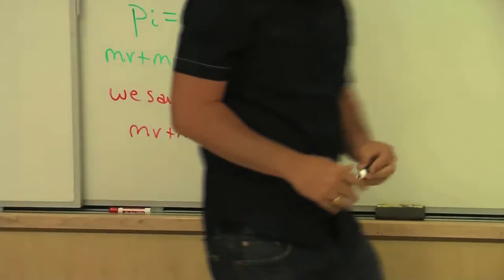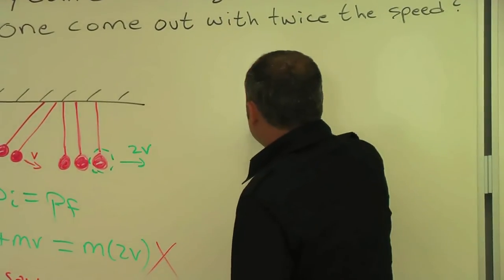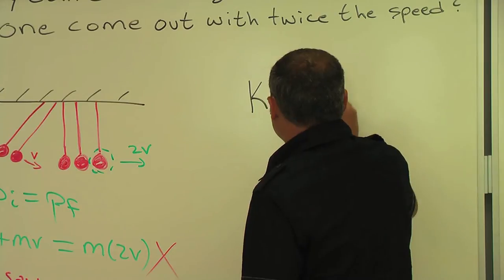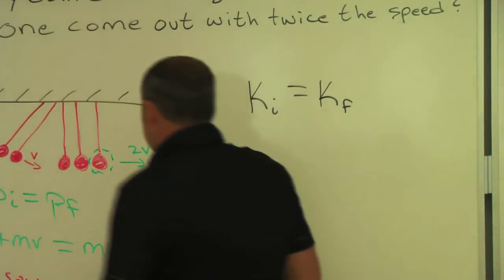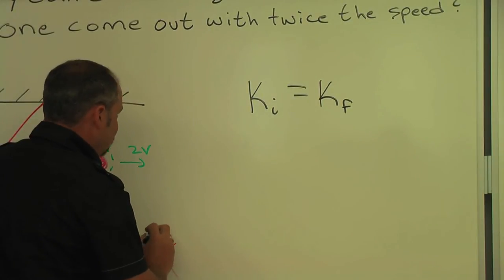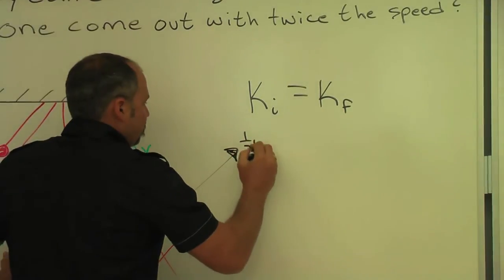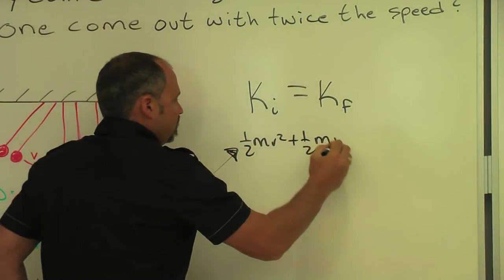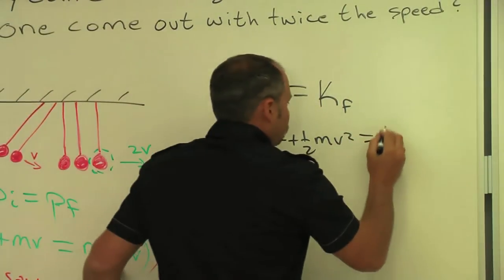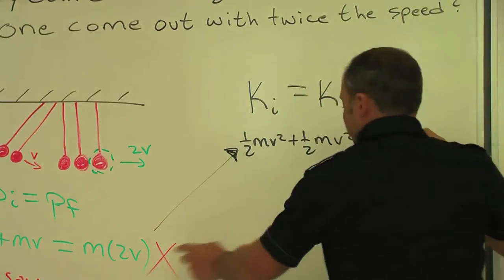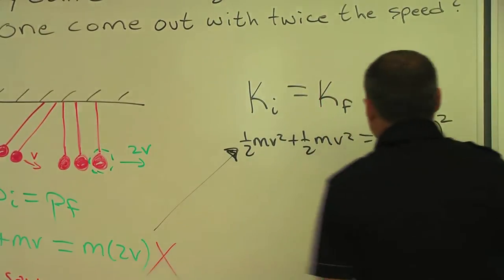So we have the initial kinetic energy equals the final kinetic energy, and in the initial kinetic energy, well, if we tried to do this, we would have one-half mv squared plus one-half mv squared, and then in the final situation, we would have one-half times m times two times the speed, all squared.